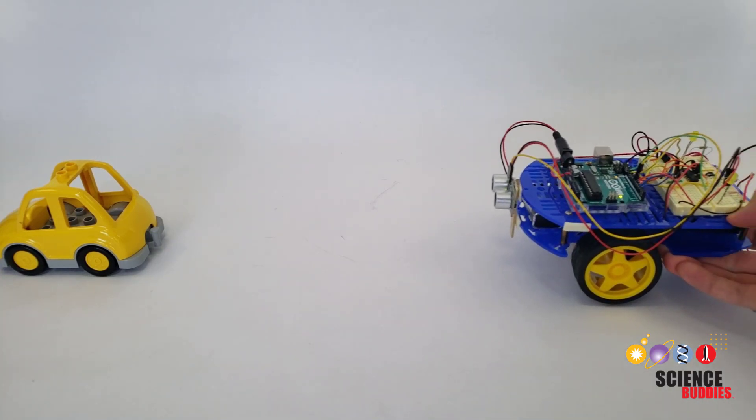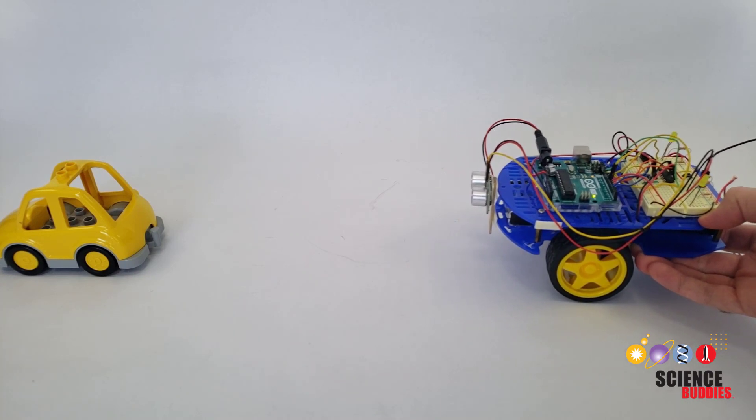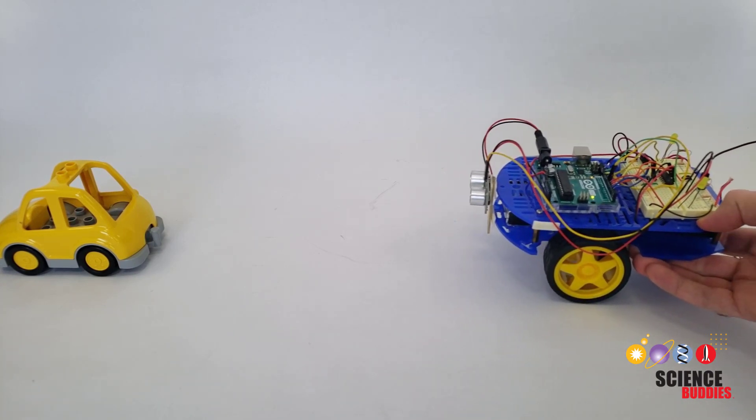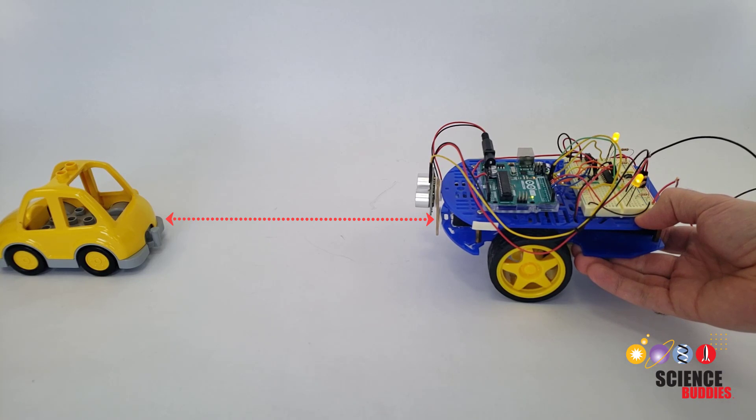This sensor measures the distance to obstacles in front of the robot. You can program the robot to stop automatically when it detects an obstacle at a certain distance.